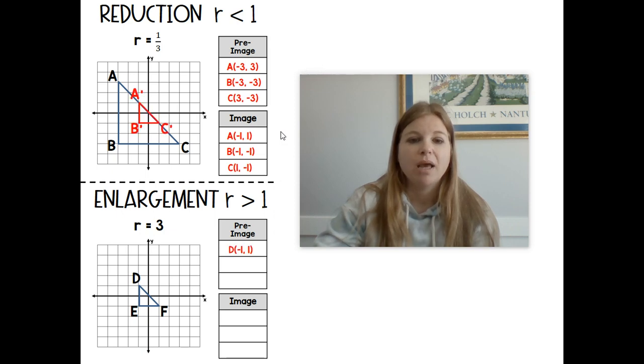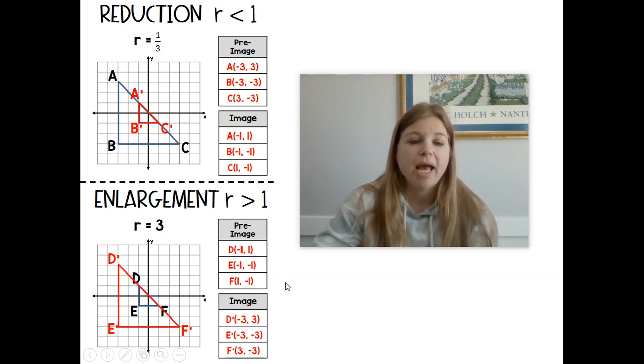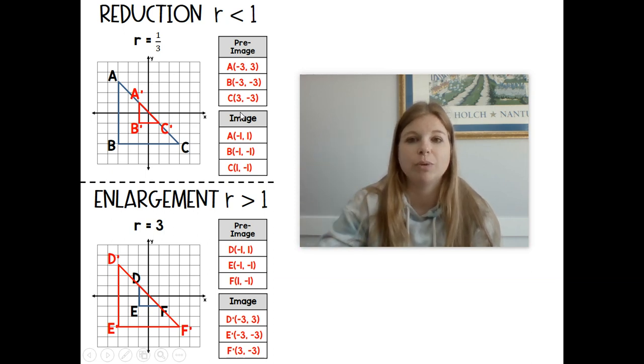If I wanted the figure to undergo an enlargement, that would mean I would have a value that I'd be multiplying that's greater than 1. If I gave you a value of 3, that would mean I would take each one of these values and simply multiply the x and y values by 3. I purposely gave us figures that actually brought us back to the original one here, so we started big and it's small, started small and ended up being big. Notice your pre-image and your image points are just in reversed order here.